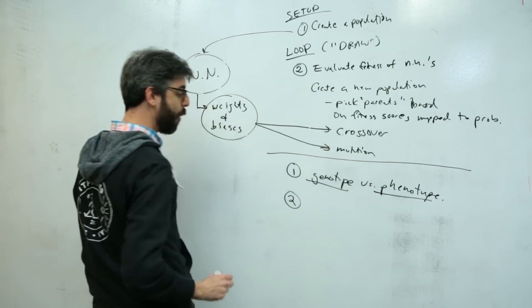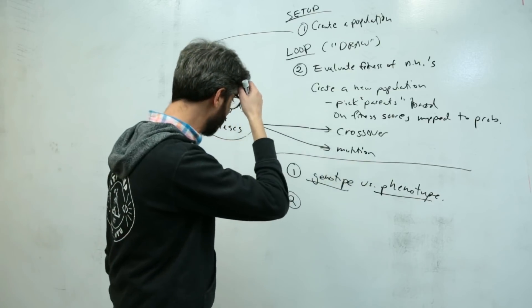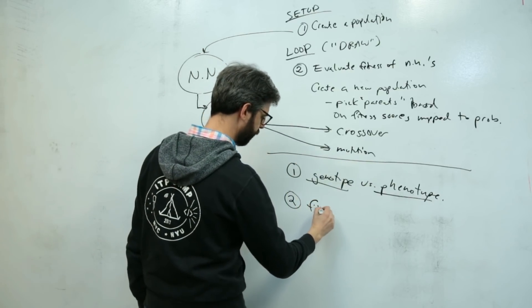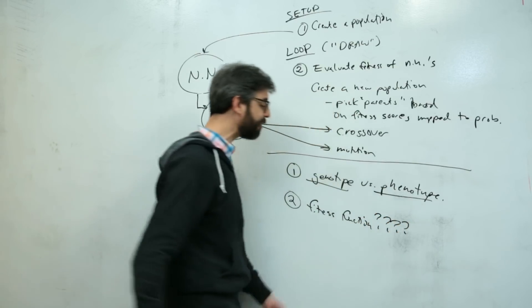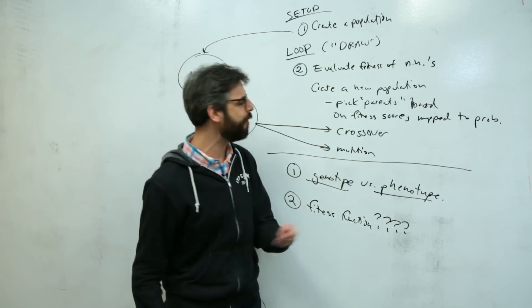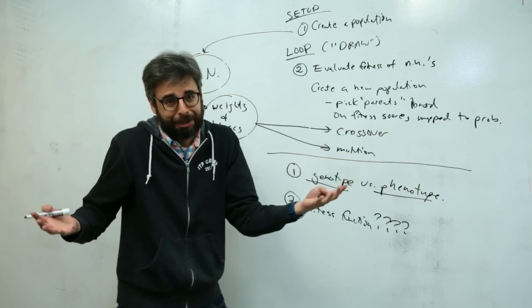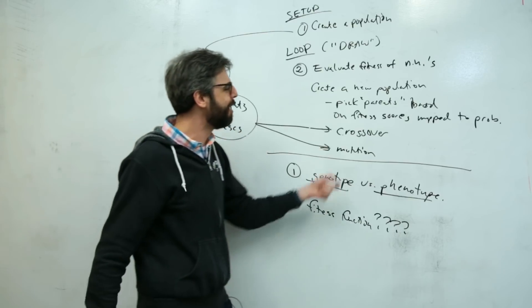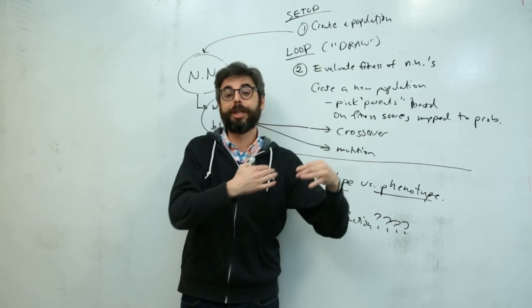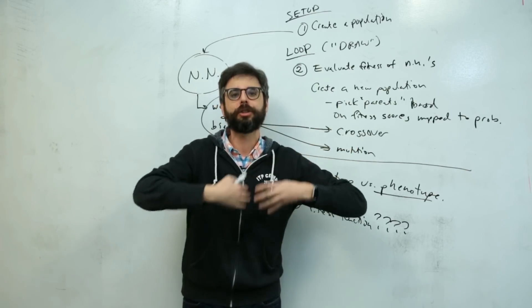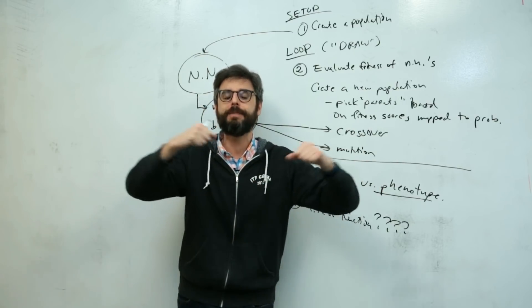The other thing that's tricky when you're making your own genetic algorithm and applying it to your own project is the fitness function. This is crucial. If you don't have a good fitness function, this whole selection process—this digital selection—I'm not going to be able to distinguish between members of the population that do really well versus ones that don't.